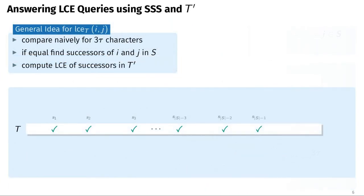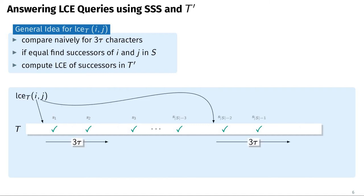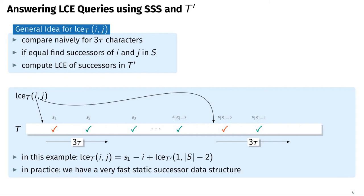Using the string-synchronizing set S, the text T, the new text T', and the black box LCE data structure for T', we can answer LCE queries on T. The general idea is: first compare the first 3*tau characters naively. If there is a mismatch, we have found the LCE. Otherwise, we search for the first position in S after I and J, called their successors in S, then use the black box to compute the LCE starting at those successors and add the distance from I or J to their successor to the result — that is, S1 minus I plus the LCE in T'. We also provide a fast static successor data structure, described in detail in our paper.